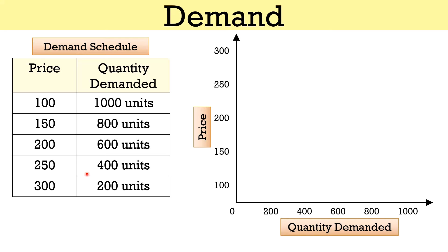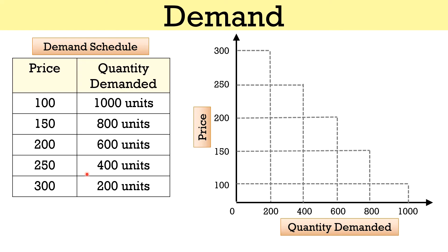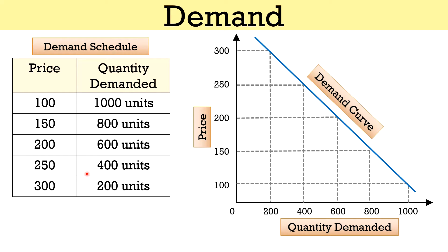When the price of the commodity is 100 rupees, the quantity demanded is 1000 units. When the price is 150 rupees, the quantity demanded is 800 units. When the price is 200 rupees, the quantity demanded is 600 units, and so forth. So there exists an inverse relationship between the price and the quantity demanded, and that is why the demand curve slopes downward from left to right. This is also called the law of demand.